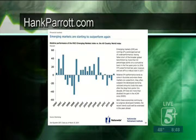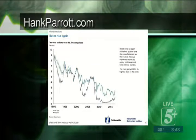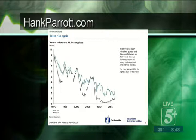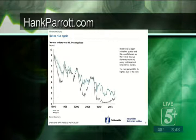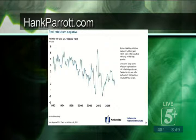Rates rose again in the first quarter as the Federal Reserve tightened monetary policy for the second time in three months, and the curve flattened. The two-year yield hit its highest level of the cycle. What's encouraging is that the Fed is being allowed to normalize policy without markets swooning — that's the real plus. However, rising headline inflation pushed real 10-year yields back into negative territory. Treasuries do not offer particularly compelling value and are still underperforming inflation — and we're talking about tying your money up for 10 years.